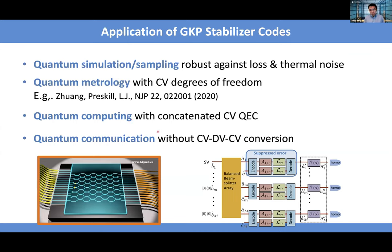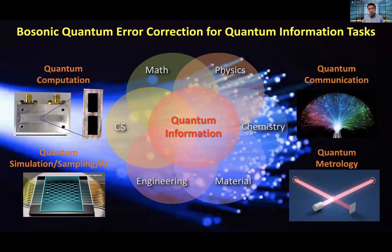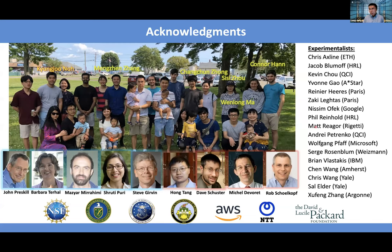For the sake of time, I'll stop here. The key message is that there are various quantum information applications that can be enhanced by bosonic quantum error correction. I'd like to thank all my group members and collaborators from theory and experiment who enabled this program of research. Thank you for your attention. I'll be happy to take questions.